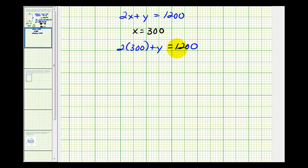Two times 300 plus y must equal 1,200. So this is 600. So if we subtract 600 on both sides, we have y equals 600, and these are both in yards.